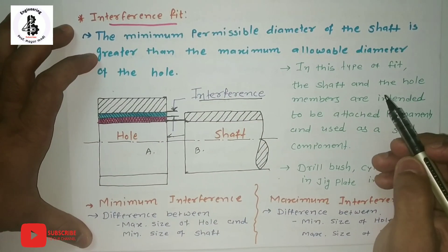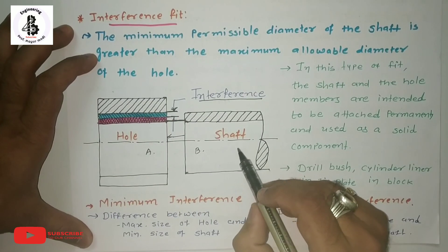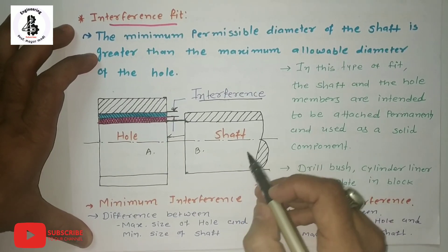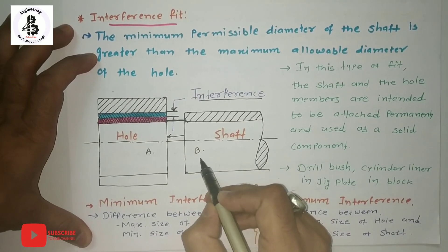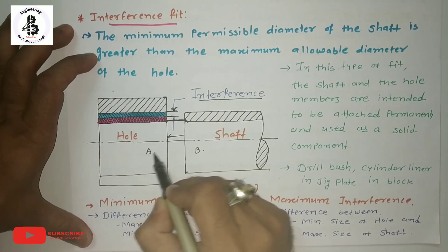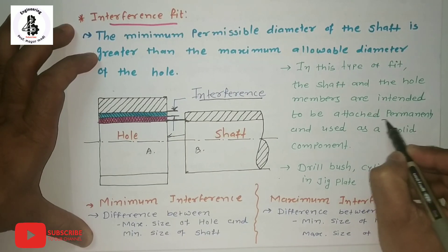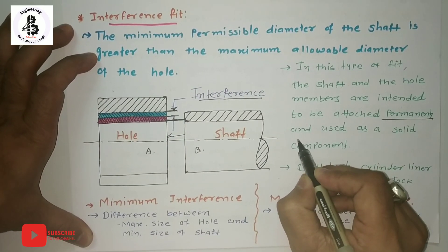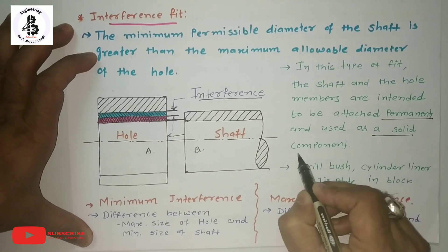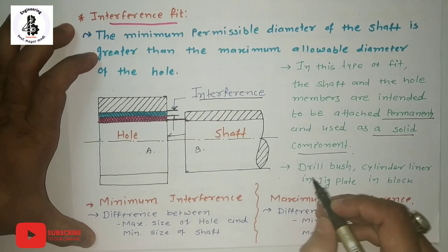In this type of fit, the shaft and hole members are intended to be attached permanently and used as a solid component. Once you fix component B into component A, or A with B, it will make a permanent joint — you can say permanent use of that particular component, making it a solid component.